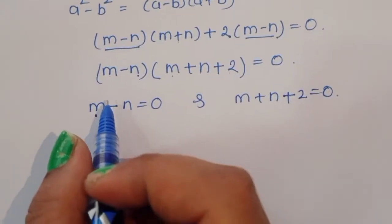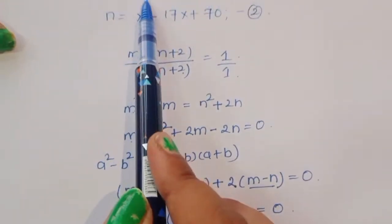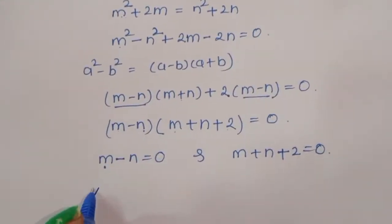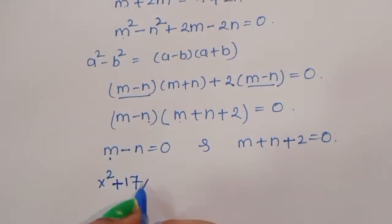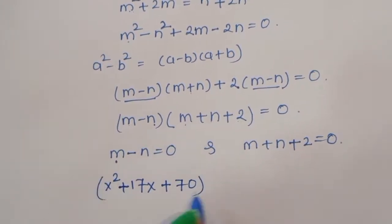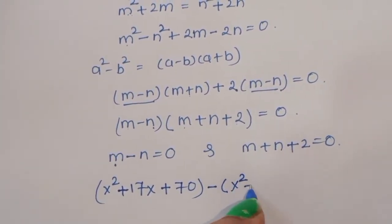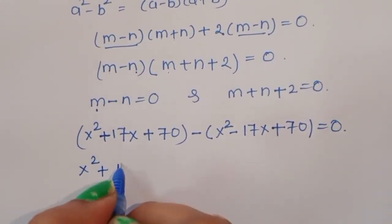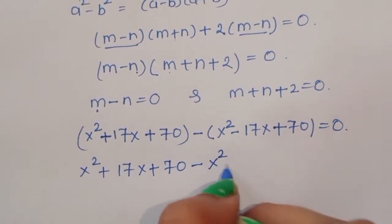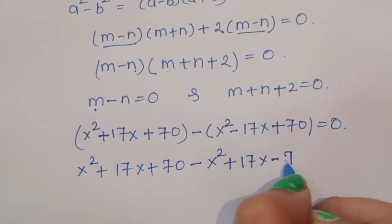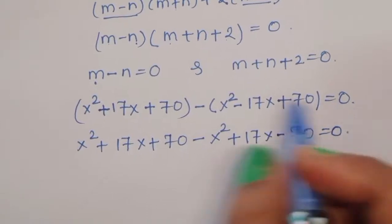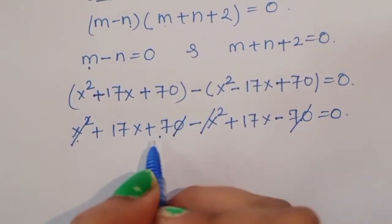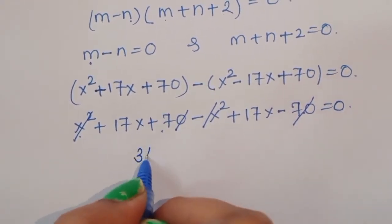So either m-n = 0 or m+n+2 = 0. For the first case, m-n = 0: substituting m = x²+17x+70 and n = x²-17x+70, we get (x²+17x+70) - (x²-17x+70) = 0. The x² and 70 terms cancel, leaving 34x = 0.